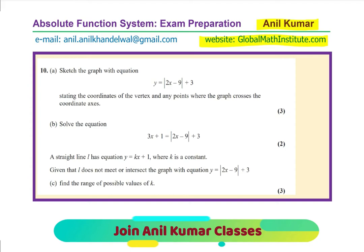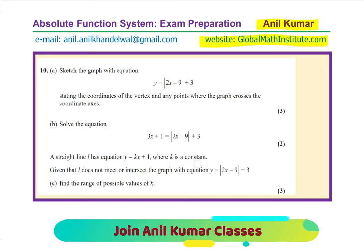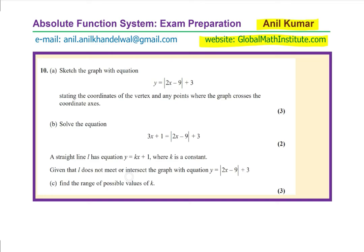The question is: Part A — sketch the graph with the equation y equals the absolute value of 2x minus 9 plus 3, stating the coordinates of the vertex and any point where the graph crosses the coordinate axes. Part B — solve the equation 3x plus 1 equals the absolute value of 2x minus 9 plus 3. Part C — a straight line L has equation y equals kx plus 1 where k is a constant. Given that L does not meet or intersect the graph with equation y equals the absolute value of 2x minus 9 plus 3, find the range of possible values of k.